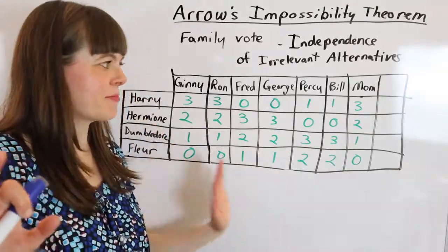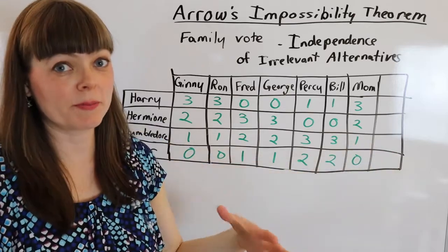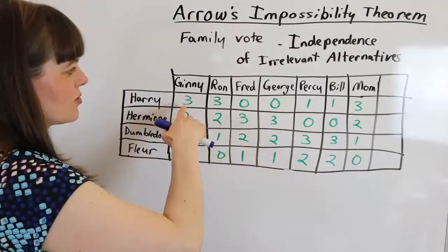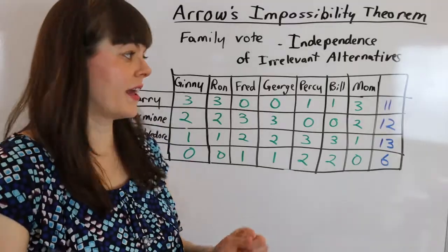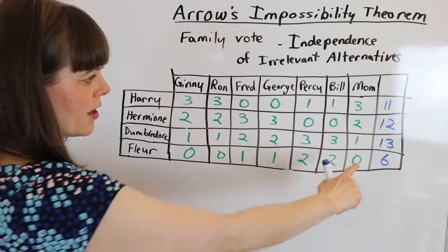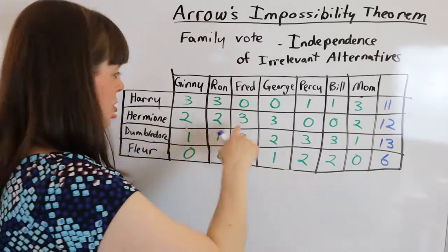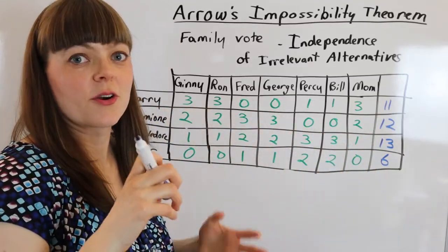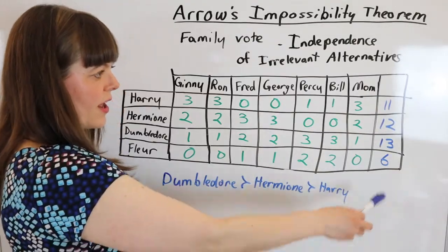I need there to be seven people for this example, so I had to get rid of the dad, but that final column will be for us to tally up the votes. To score the voting system, you simply add up the points given to each person. In this voting system, we have a collective preference ordering: the person with the most points is Dumbledore, second most points is Hermione, third most points is Harry. So the collective order is Dumbledore preferred to Hermione preferred to Harry.